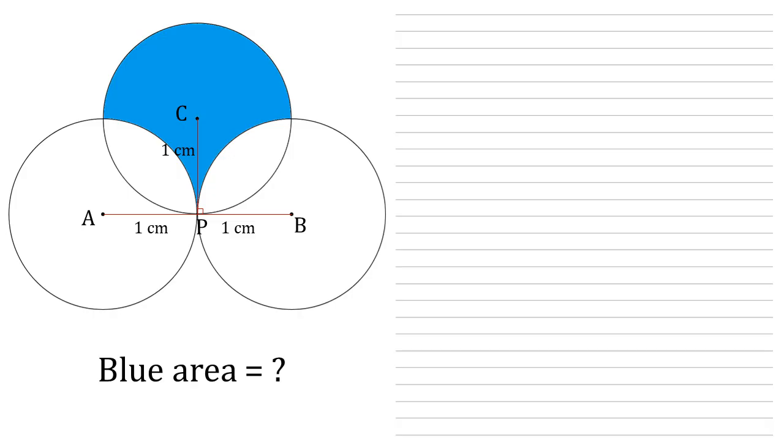And as PC is a radius, this must be a right angle. We can add the line from B up to the point Q, which is where the circles of B and C intersect in the top right. This is also going to be a right angle because we can see that PB is one centimetre. CQ is also a radius, so it must be one centimetre. We've got the right angle at CPB, so this must be making a square of sides one centimetre. So we've got a right angle there as well.